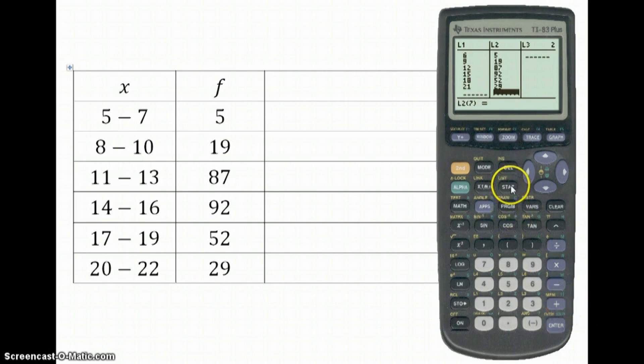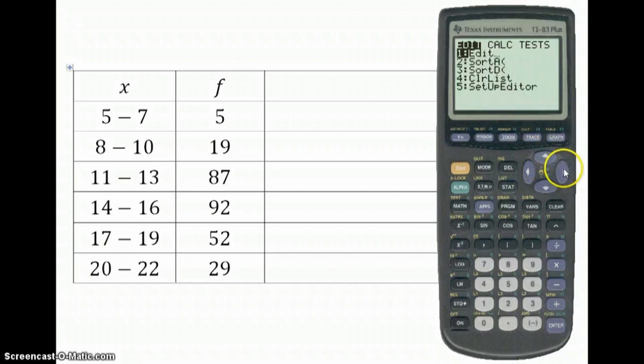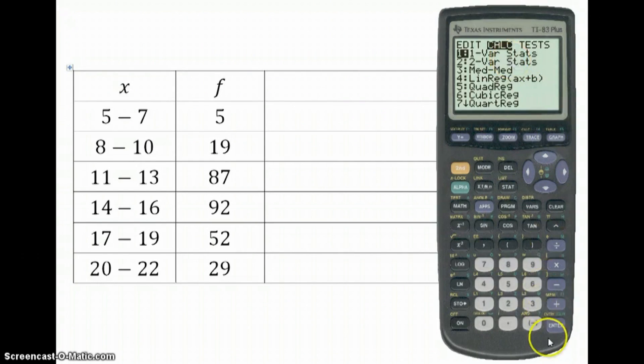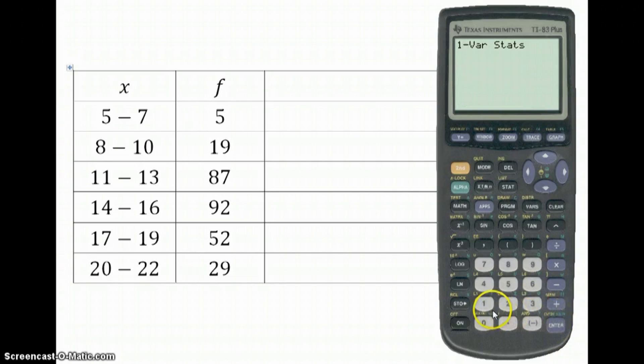So now what we want to do is we want to press stat and find calc. So we go right to calc. And then to one variable stats. So press enter. We then want to call up list 1, list 2. So list 1, list 2 are down here on top of the 1s and 2s. To get them, you've got to press 2nd first. So 2nd, then 1. We'll bring up L1. Then comma, 2nd, 2. That brings up L2. Then press enter.